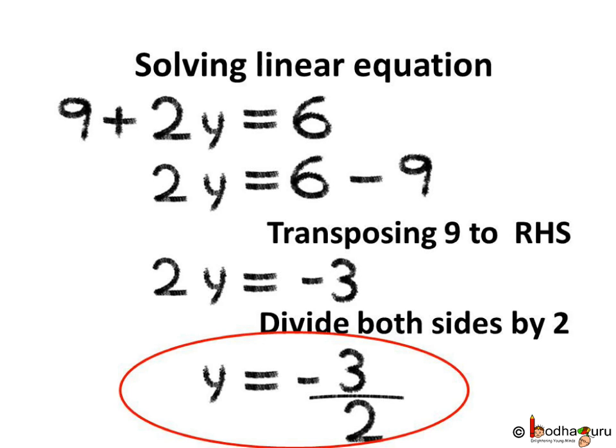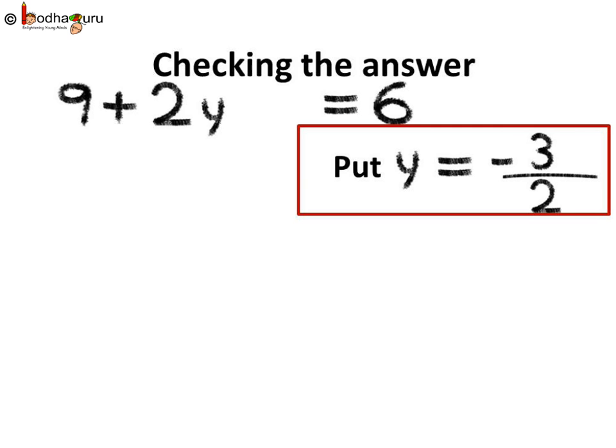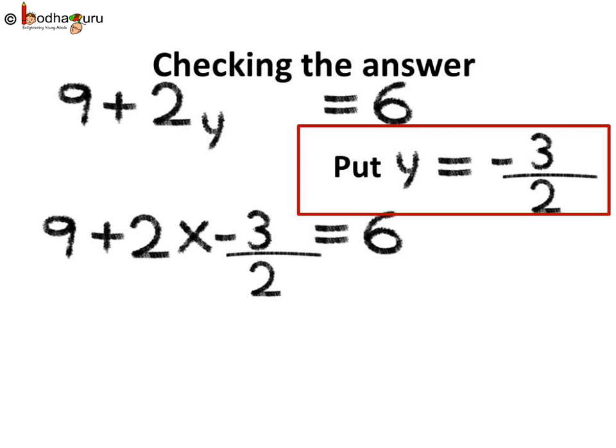Now how do we check whether the answer y equal to minus 3 by 2 is correct? We have the equation 9 plus 2y equal to 6. Let us put the value of y equal to minus 3 by 2 in the given equation. If the LHS comes out to be equal to RHS, then minus 3 by 2 is the solution. On the LHS: 9 plus 2 multiplied by minus 3 by 2.